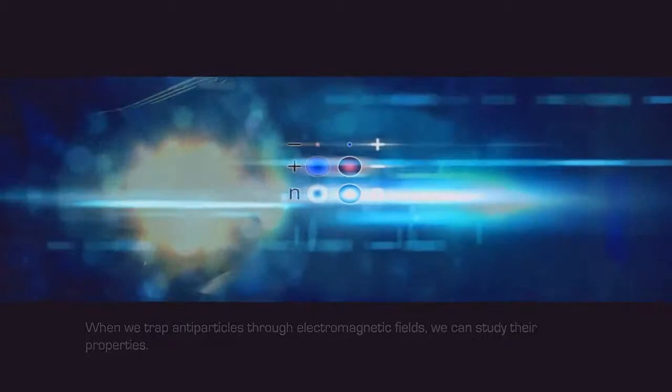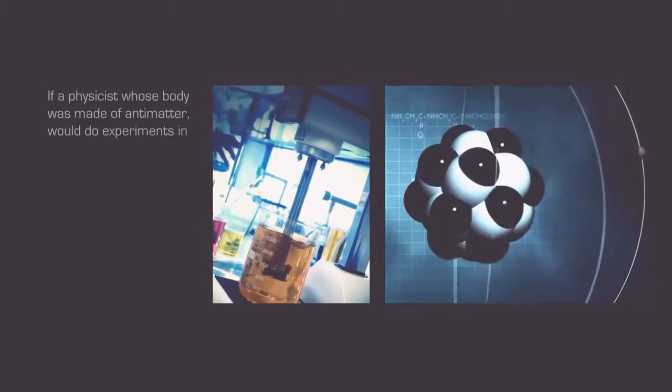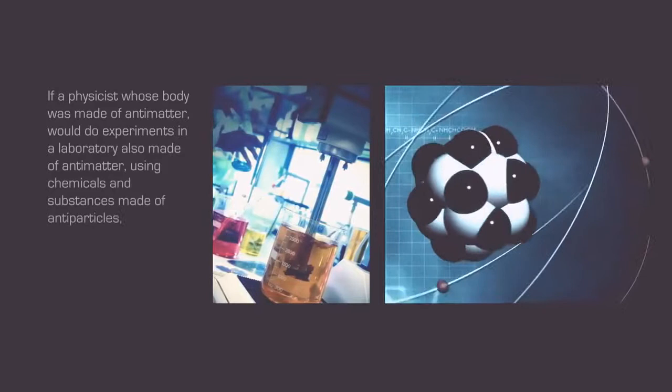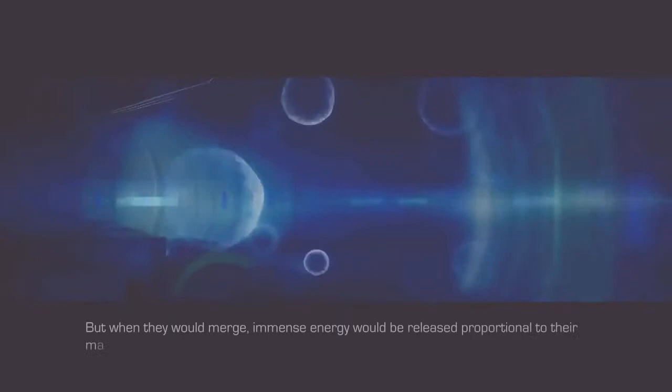When we trap antiparticles through electromagnetic fields, we can study their properties. The quantum state of particles and antiparticles can be interchanged by applying the charge conjugation, parity and time reversal operators. To clarify, if a physicist whose body was made of antimatter would do experiments in a laboratory also made of antimatter using chemicals and substances of antiparticles, he would find almost exactly the same results as his matter counterpart. But when they would merge, immense energy would be released proportional to their mass.